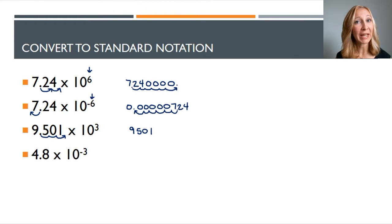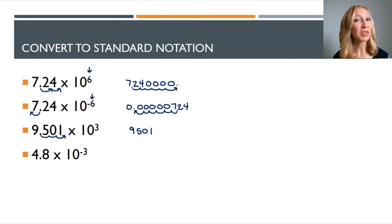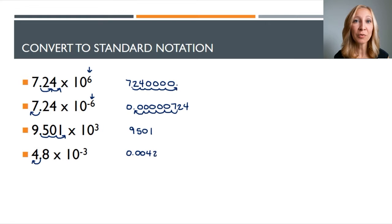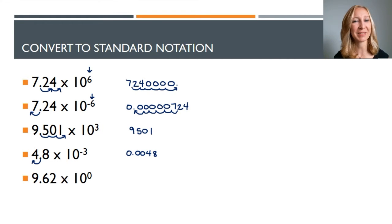Take a look at this one: four point eight times ten to the negative third. Try this one on your own, pause the video. This represents a very small number because we're dividing by ten three times, so you need to move the decimal to the left three places. If you move the decimal and run out of numbers, use zeros as placeholders. So we get point zero zero four eight.